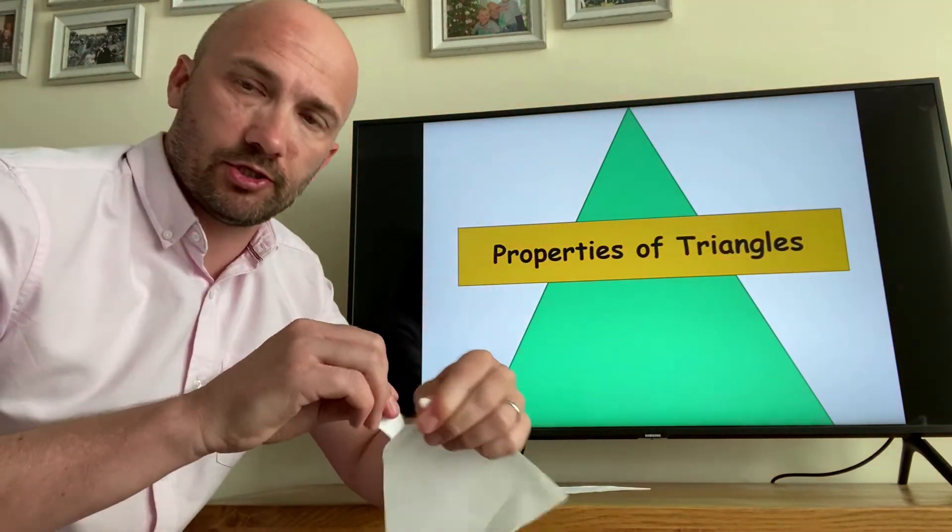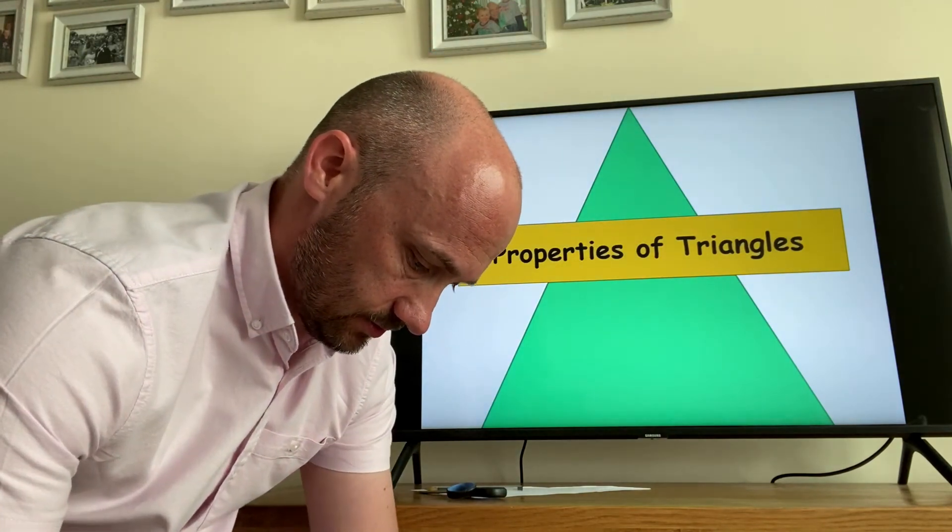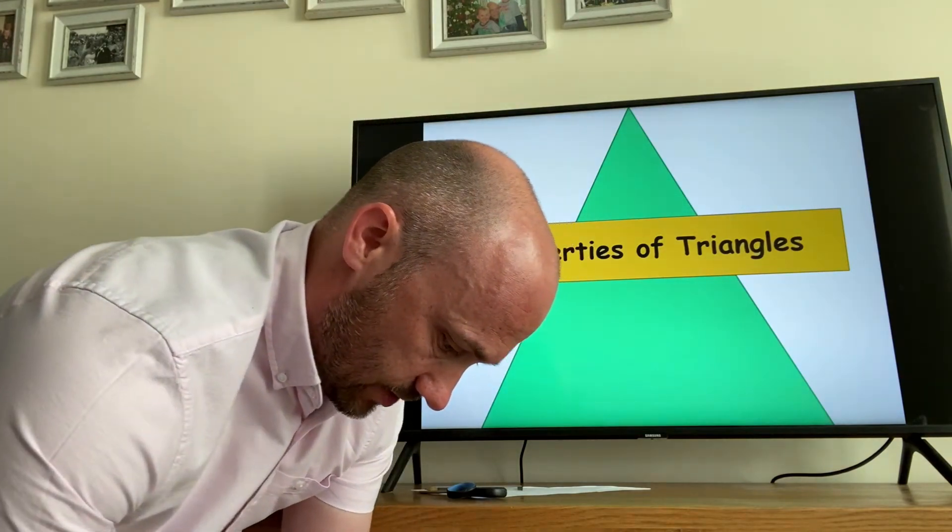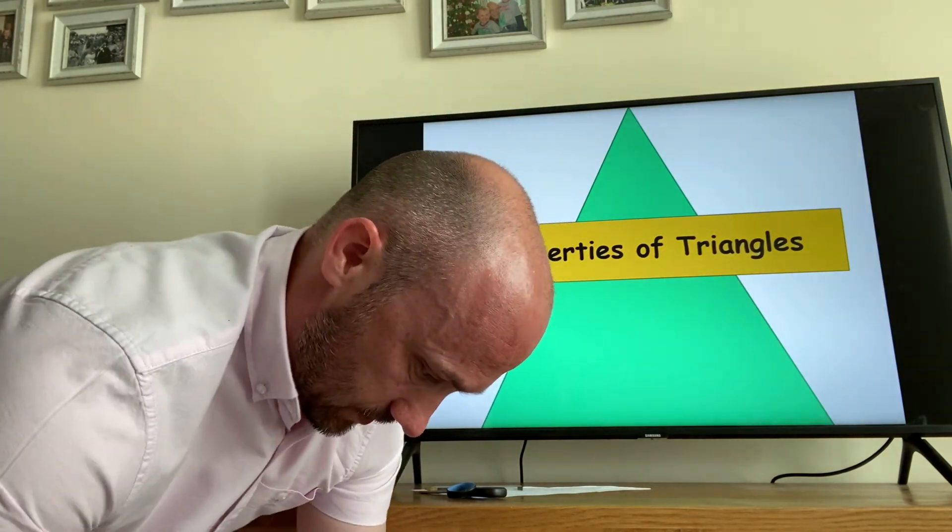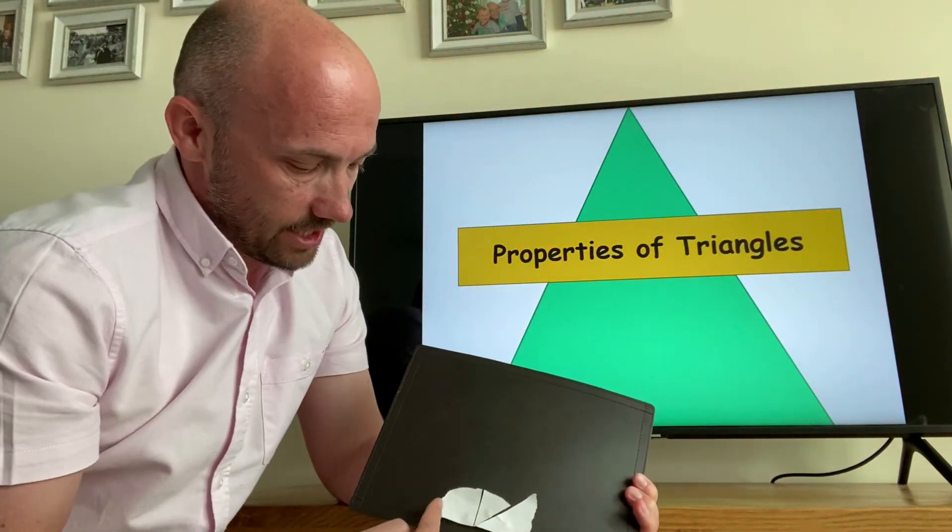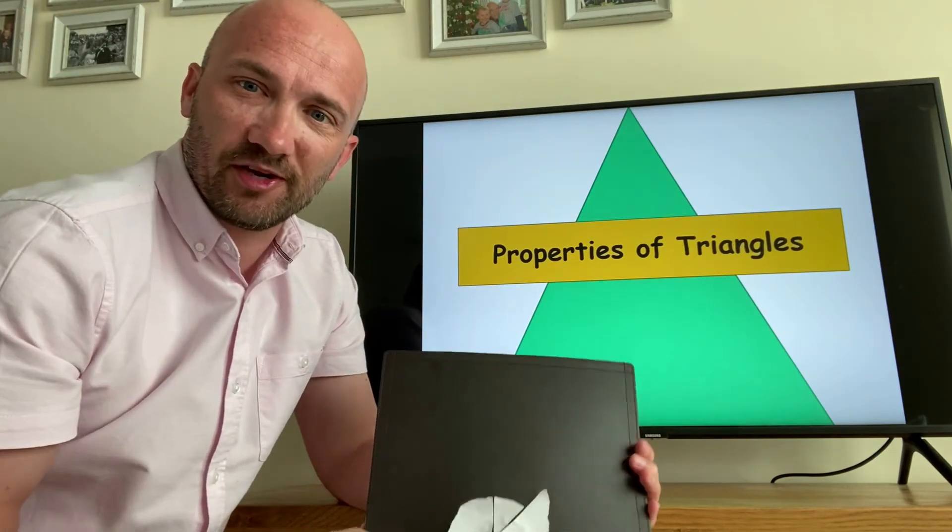If I was to tear off the angles and then very quickly, three angles join together on a straight line, which is the same as a protractor size 180.